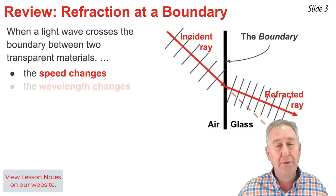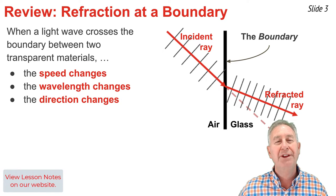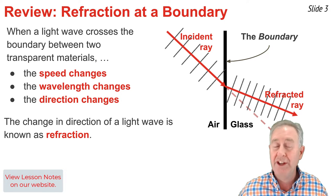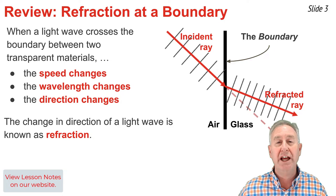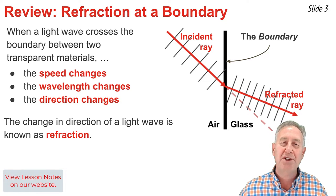First, the speed at which the light wave travels changes. Second, the wavelength changes. And third, the direction changes. This change in direction of a light wave as it crosses a boundary is what we refer to as refraction, and it takes place as long as the light wave approaches the boundary in a direction other than perpendicular.